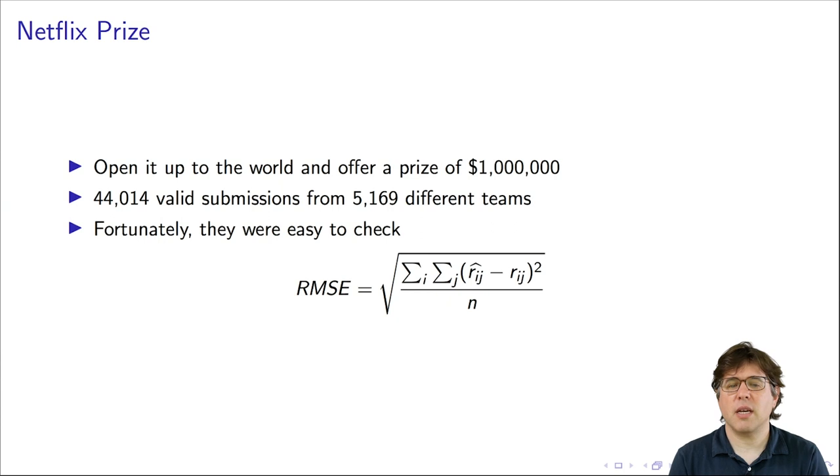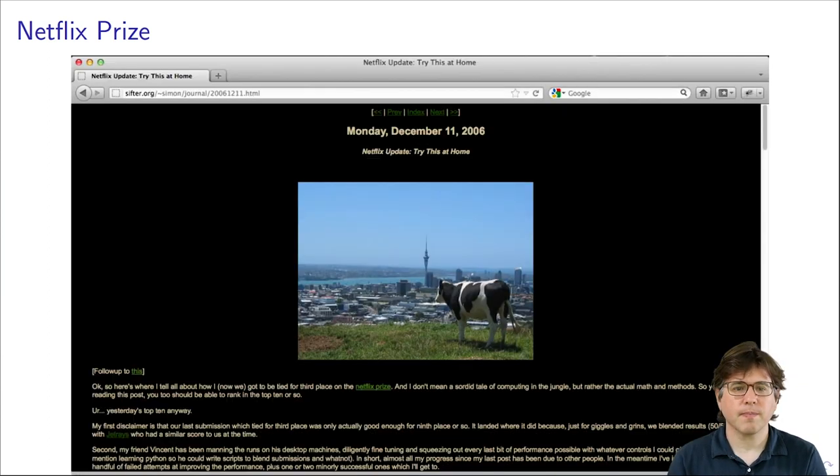So what they did is they had an easy system. They took the predicted ratings that people submitted. They compared it to the actual ratings. They calculated the root mean squared error. So it's very simple, easy to evaluate. Just compare your predictions to the ground truth in the held out test set.